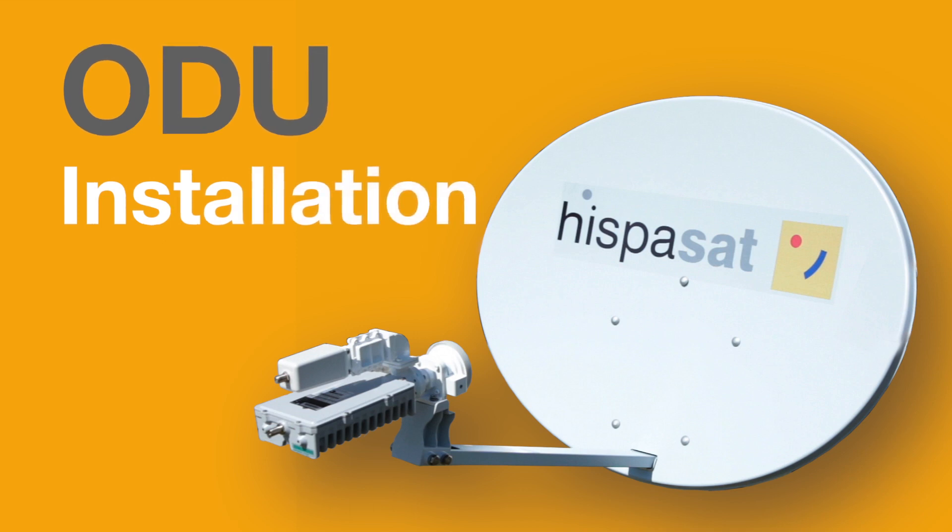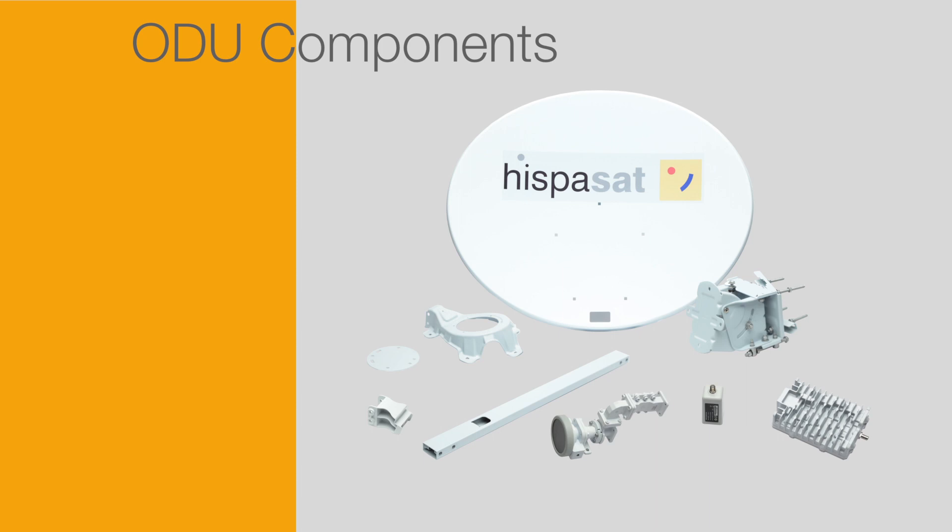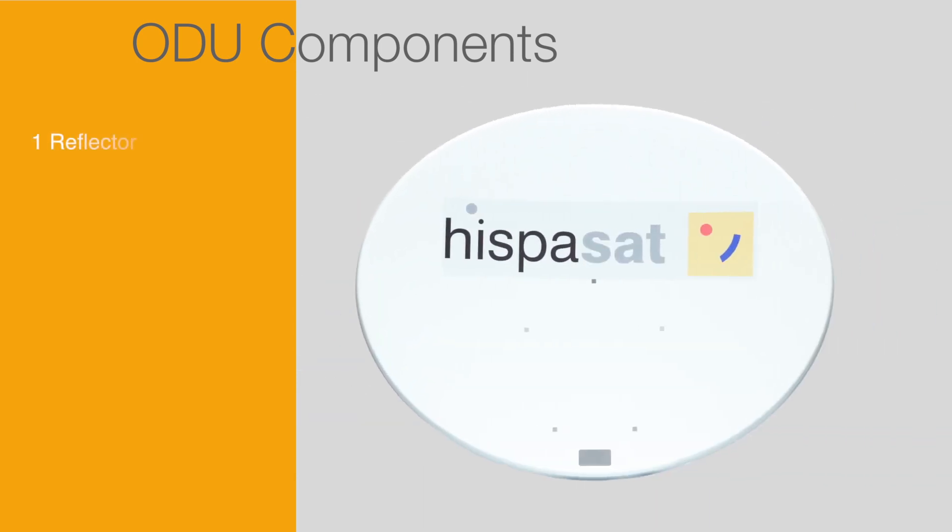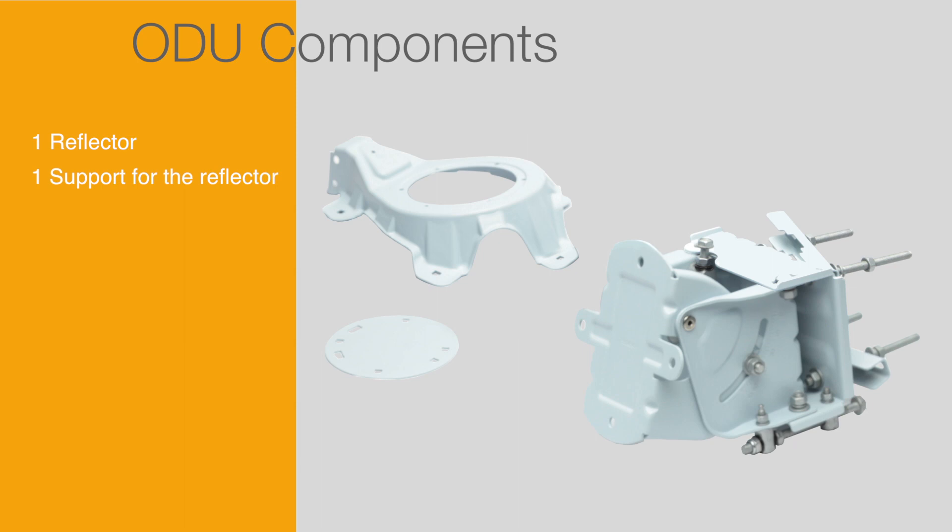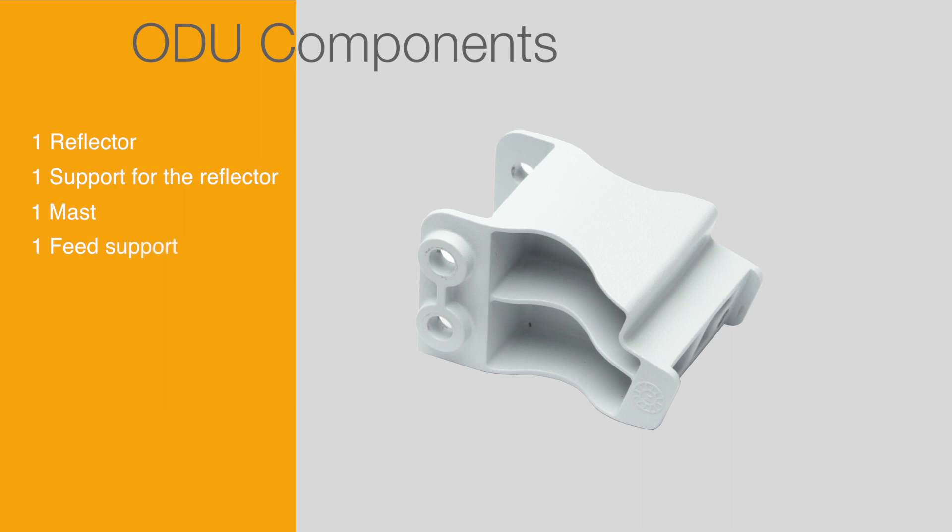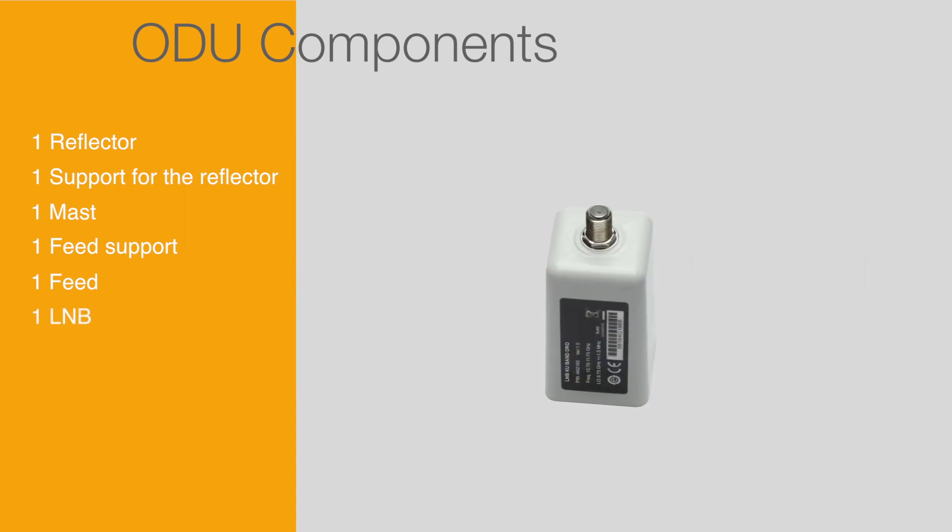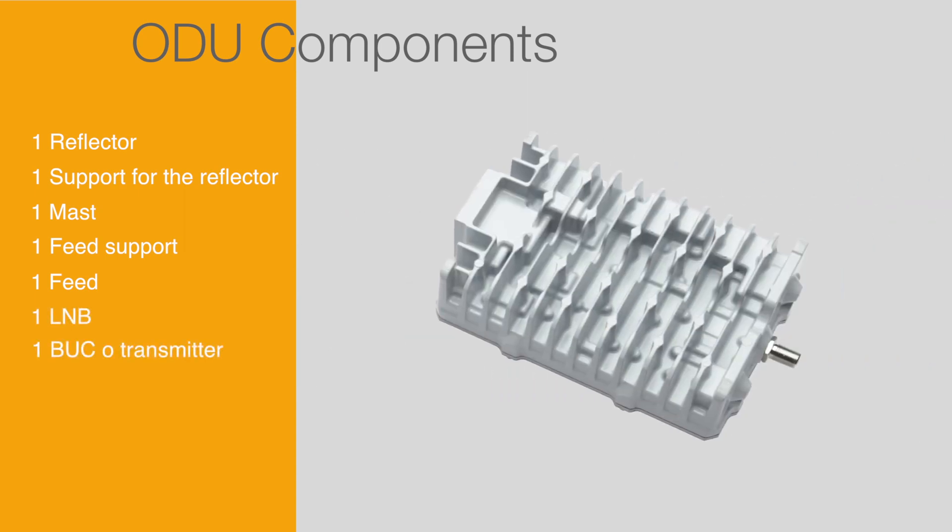ODU installation. ODU components: all of the elements that make up the ODU will have to be certified by ESPASAT and consist of the following pieces: one reflector, one support for the reflector, one mast, one feed support, one feed, one LNB, and one BUC or transmitter.